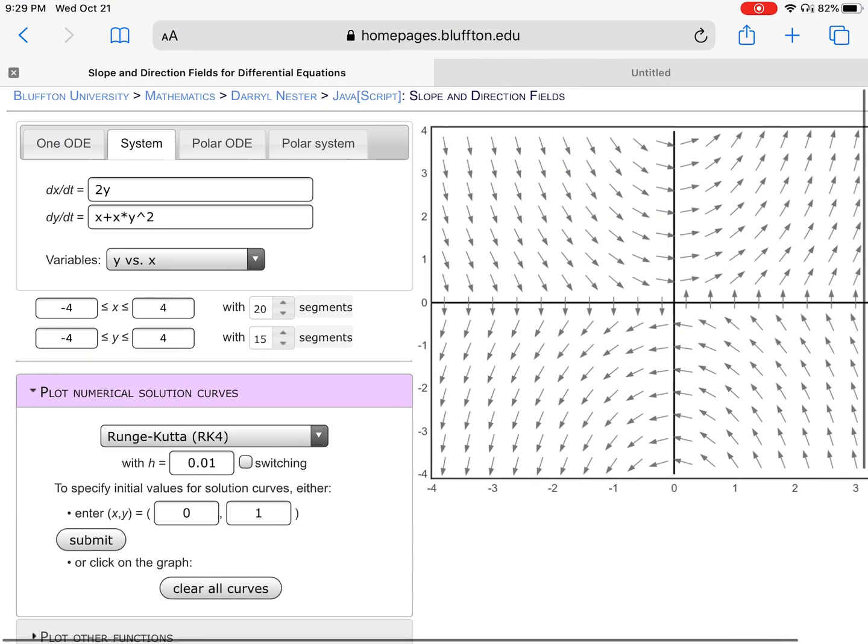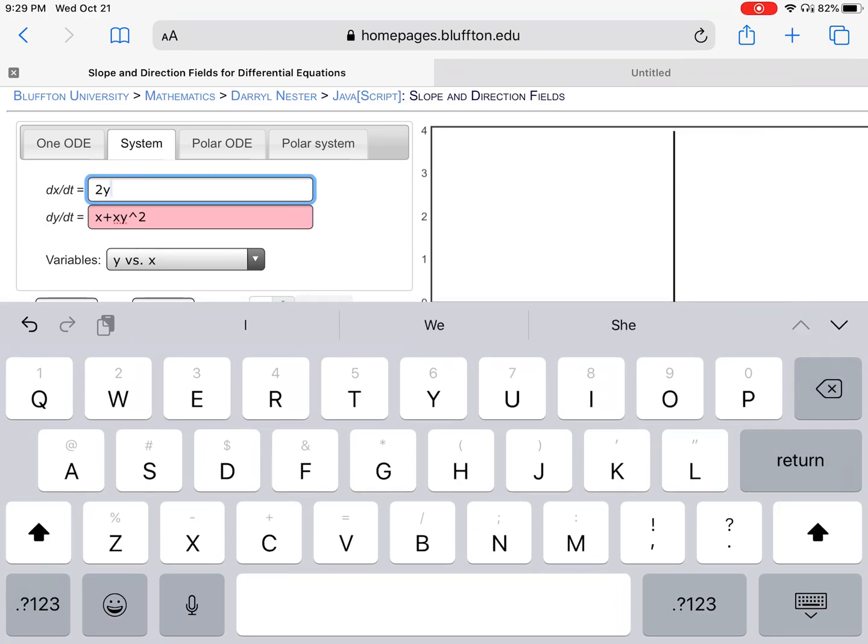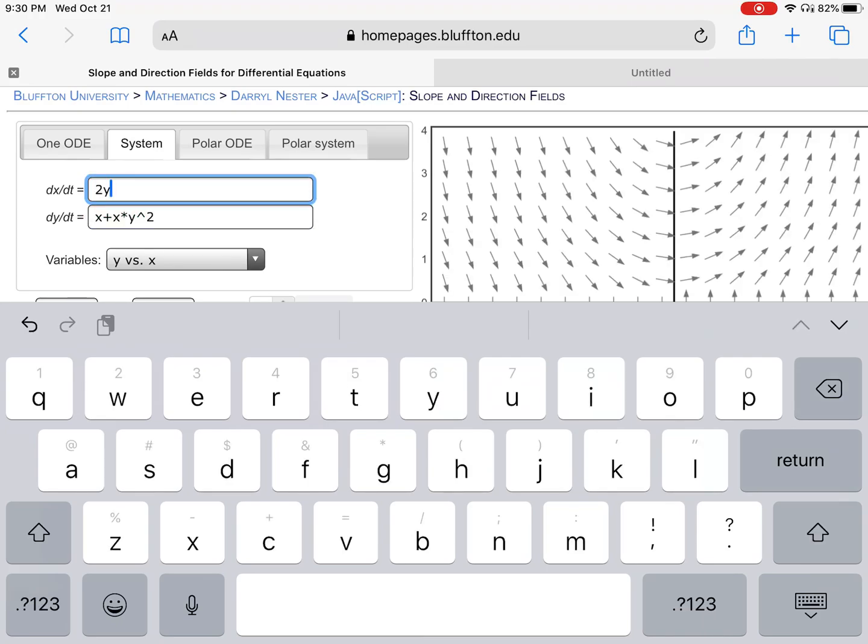So I've put in the system here, and I'll make a quick note. Notice that if I get rid of this asterisk, this gives me an error, right? So again, this is some of the syntax that sometimes is needed to get this applet to give you the direction field, putting in an asterisk for multiplication. If I do that, then it gives me the direction field.